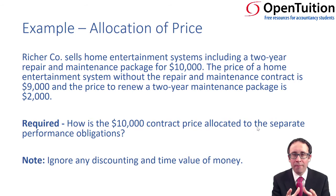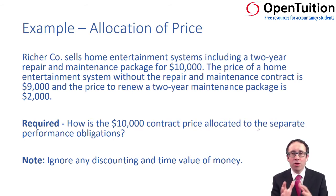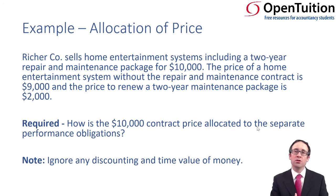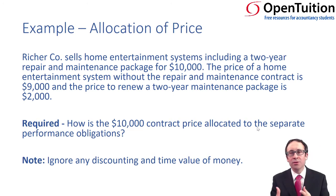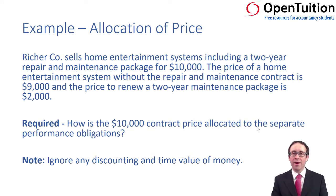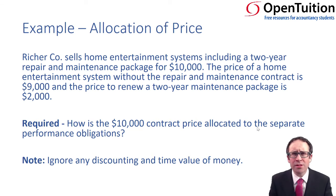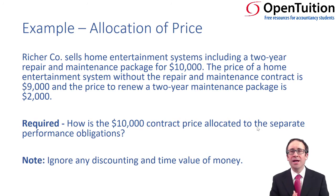There would be a $9,000 selling price for the goods. If you then bought the repair and maintenance package separately, that would cost you $2,000. So having paid $9,000 for the home entertainment system, if you came back a few days later for the maintenance package separately, you'd pay $2,000 for it.